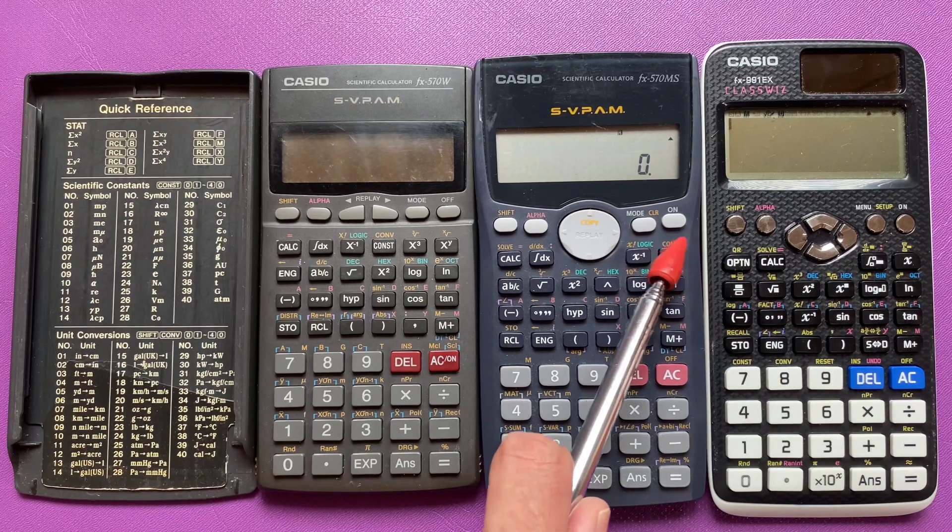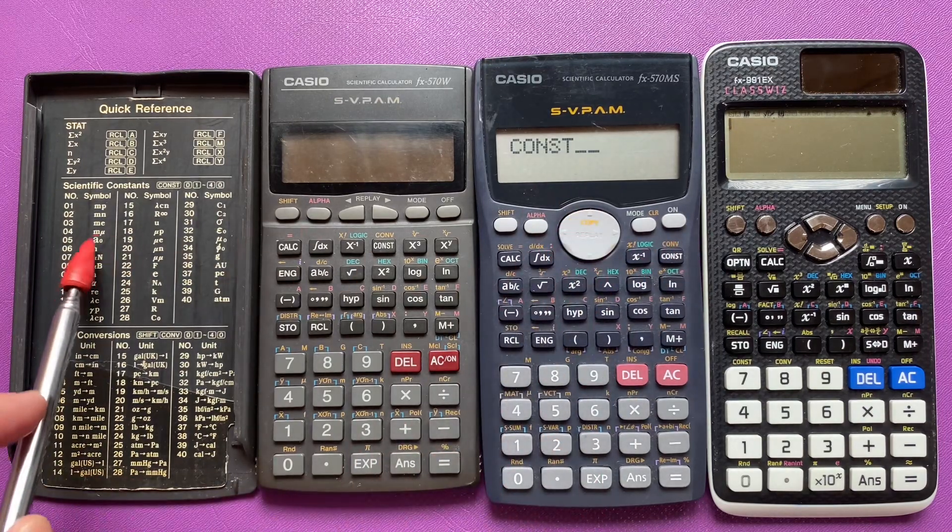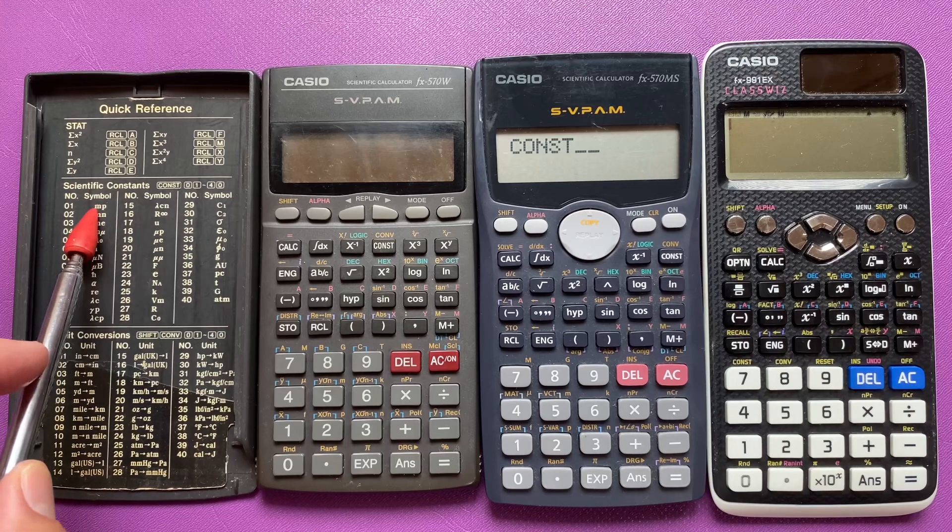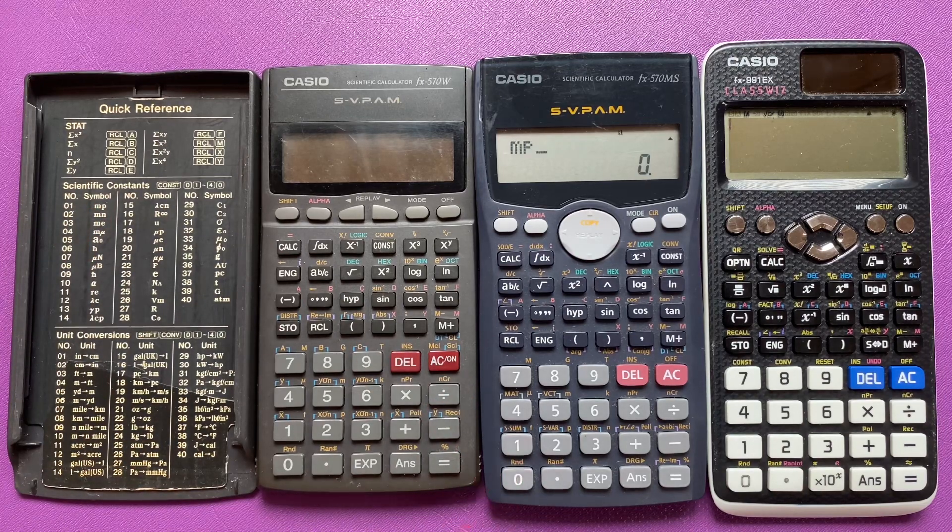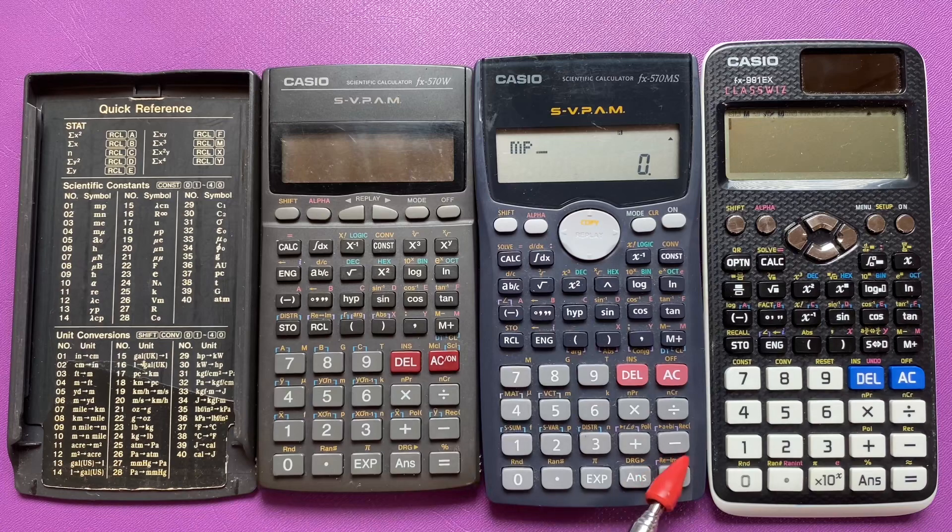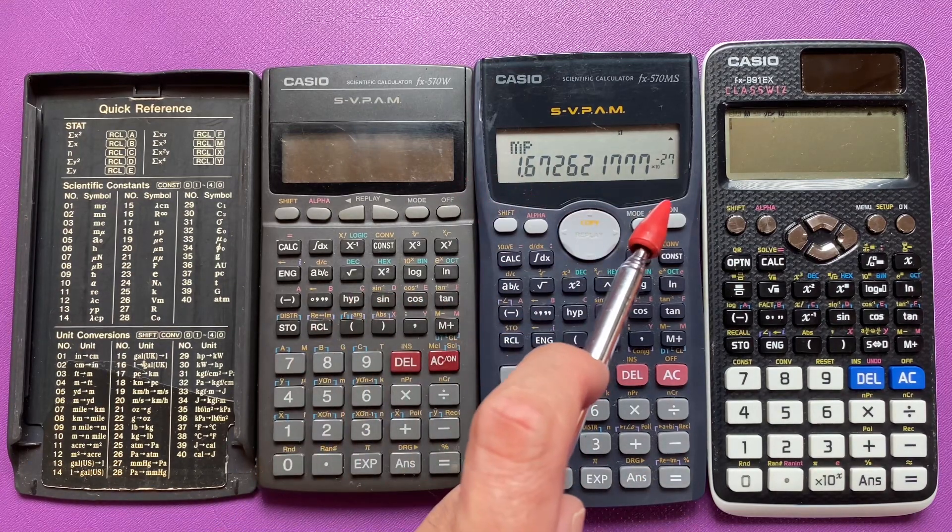One way to call a constant is to press 'constant' and then remember the number. For example, 01 is mass of proton. So press 01, then press equal, and this gives you the mass of a proton in kg.